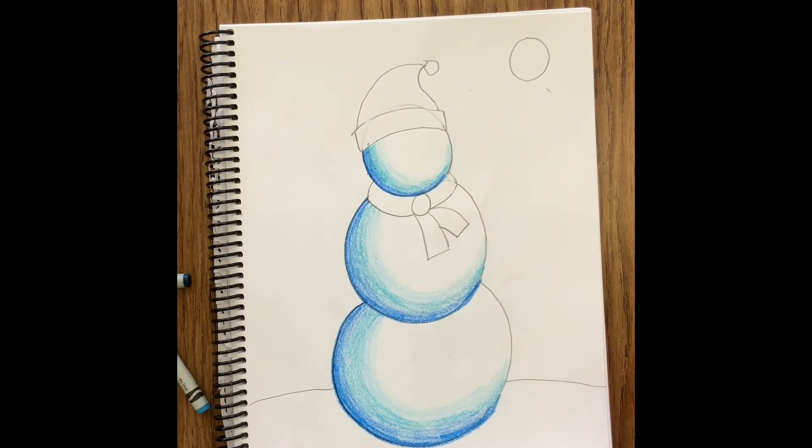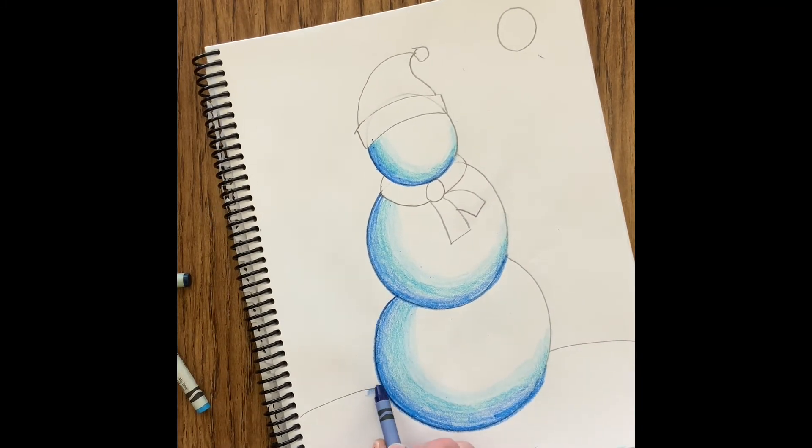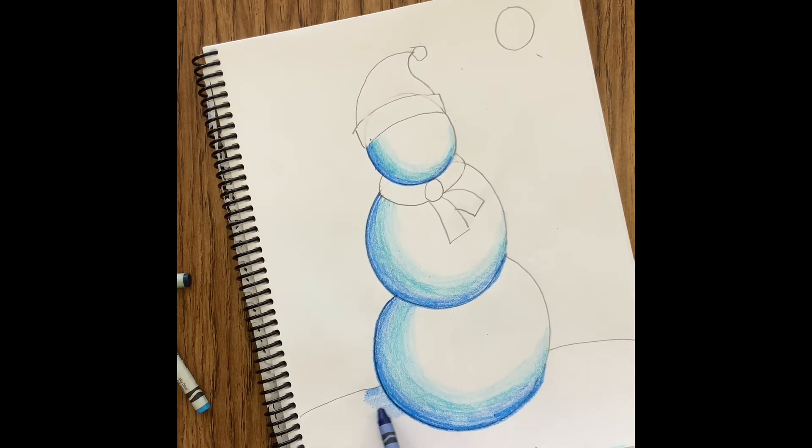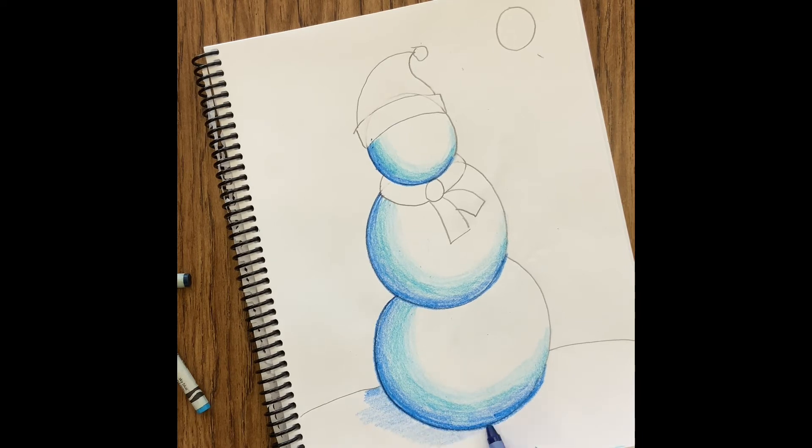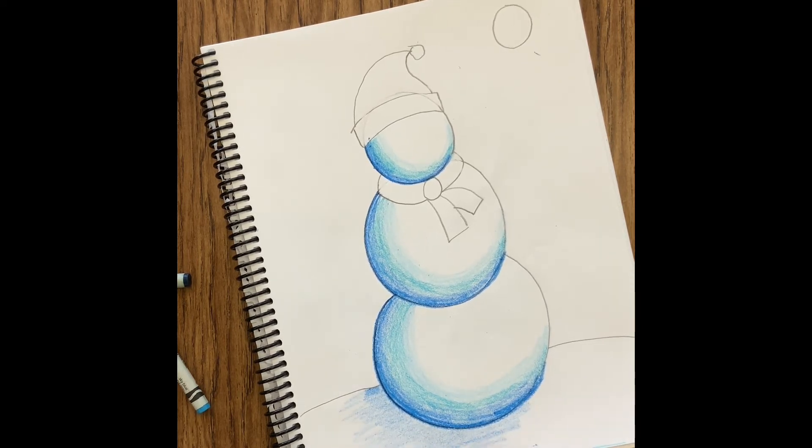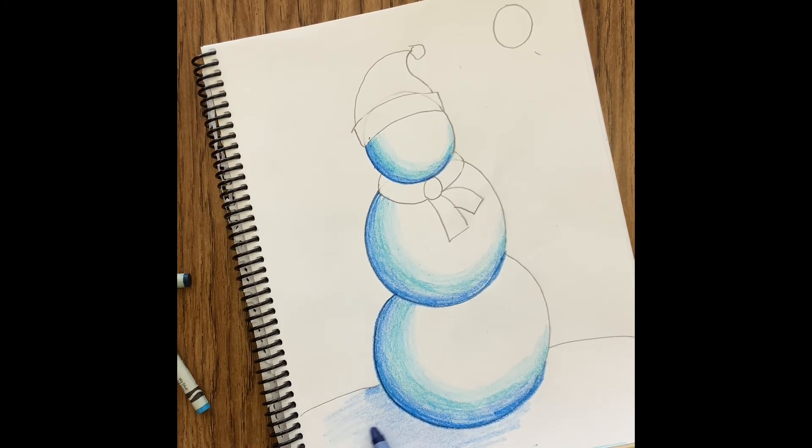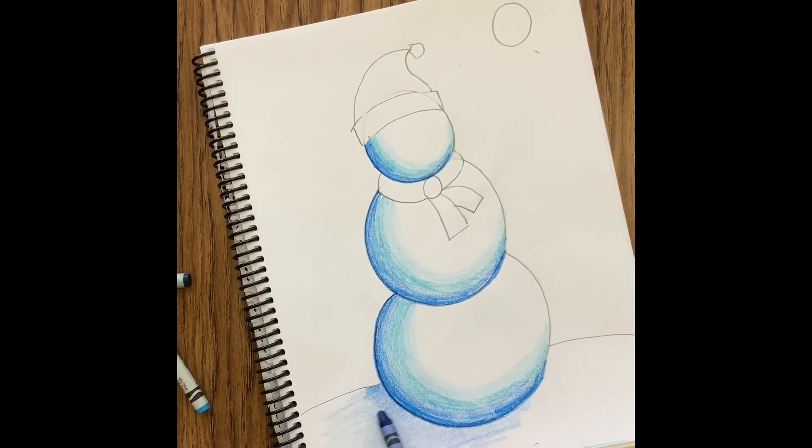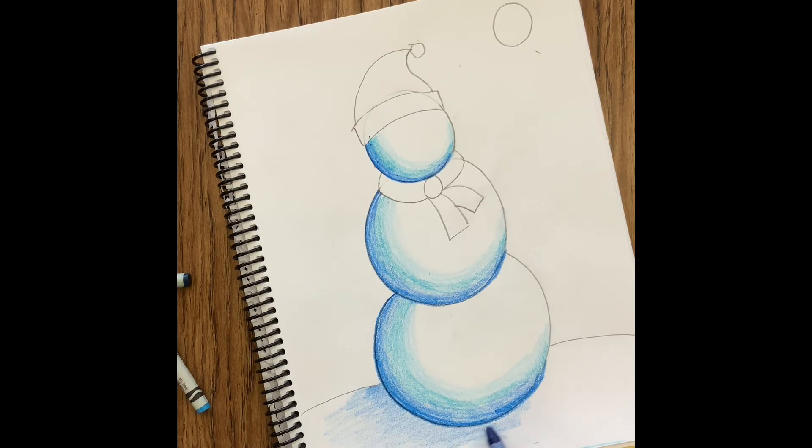Once I am done coloring the three colors dark to light to create that shadow, I'm also going to create a shadow on the ground. So the shadow on the ground would be on the opposite side of my moon. So again if my moon is in the top right then my shadow is going to be on the left side of my snowman.